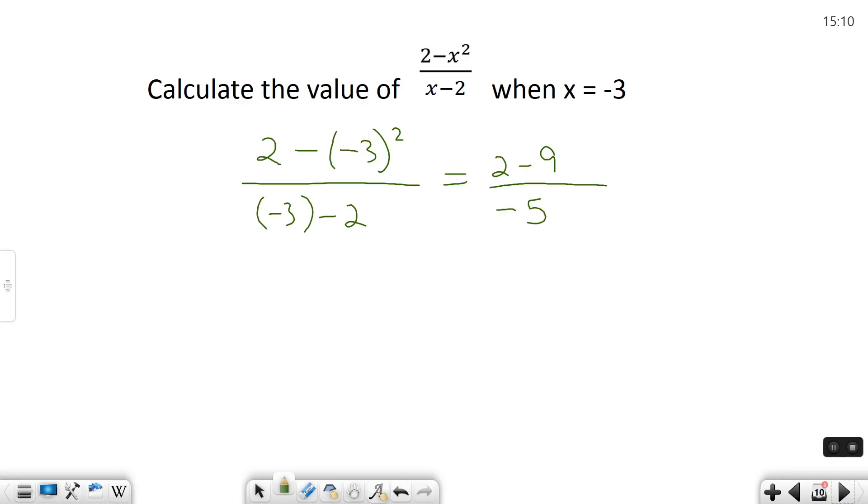We got to keep going though, because we still have stuff we have to further simplify. So 2 minus 9 is negative 7, and negative 5 on the bottom. Now a negative divided by a negative is a positive. So really, instead of writing negative 7 over negative 5, I can just write it as 7 over 5. That's going to be my final answer when x is negative 3.